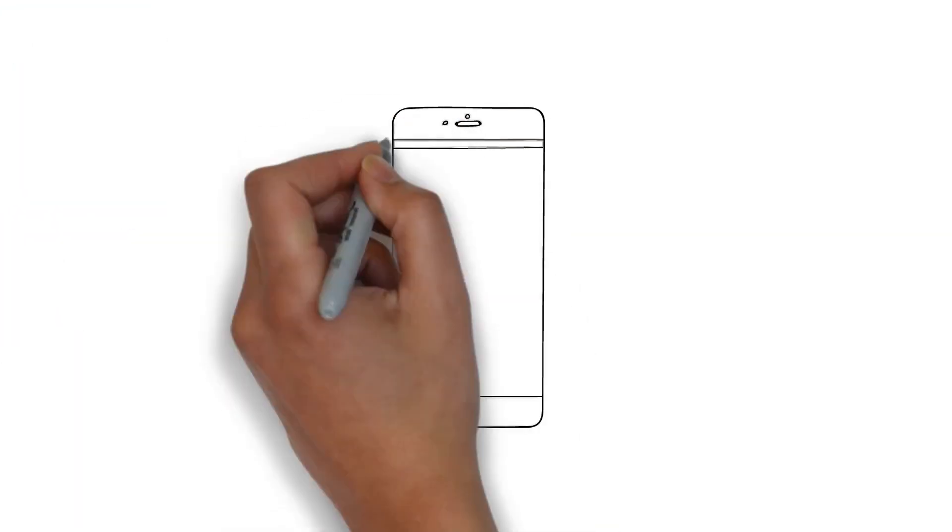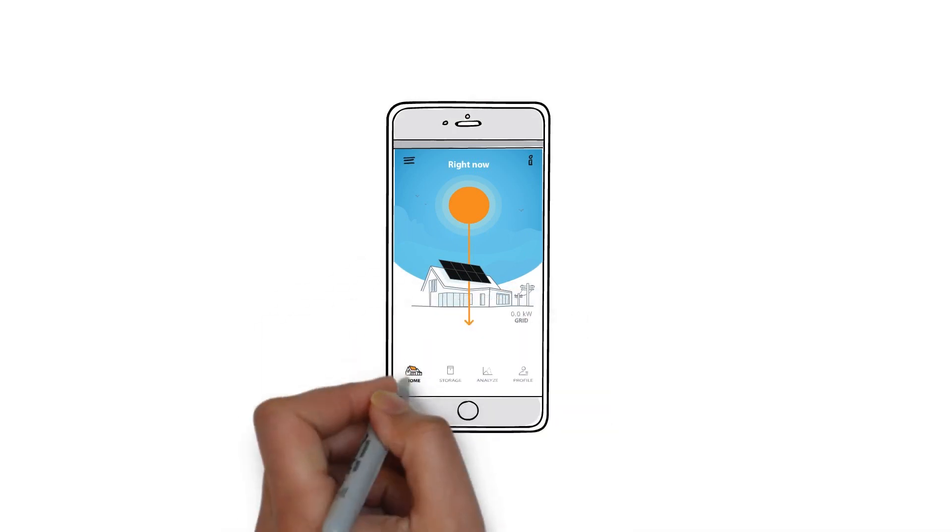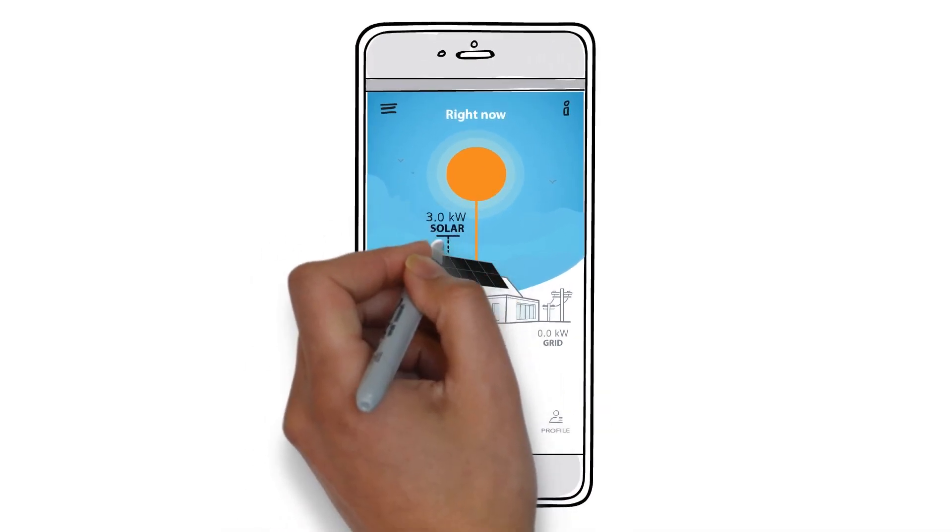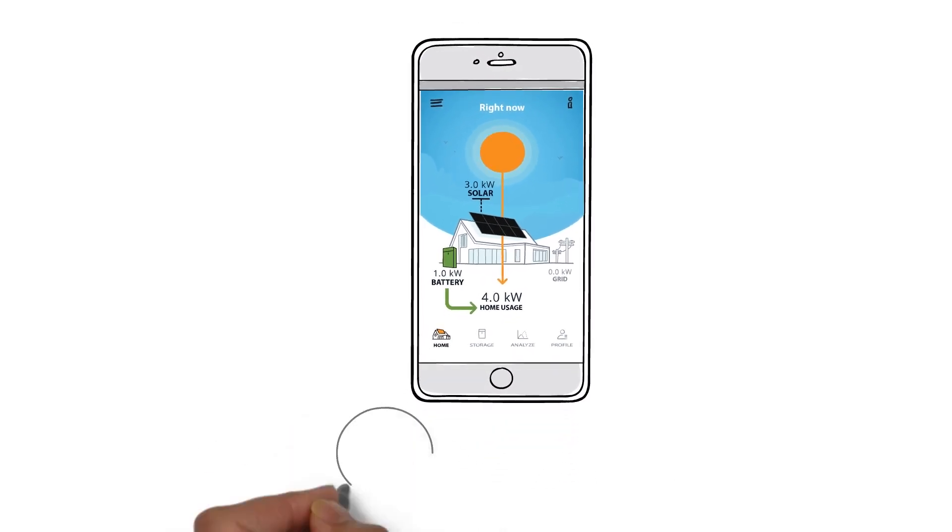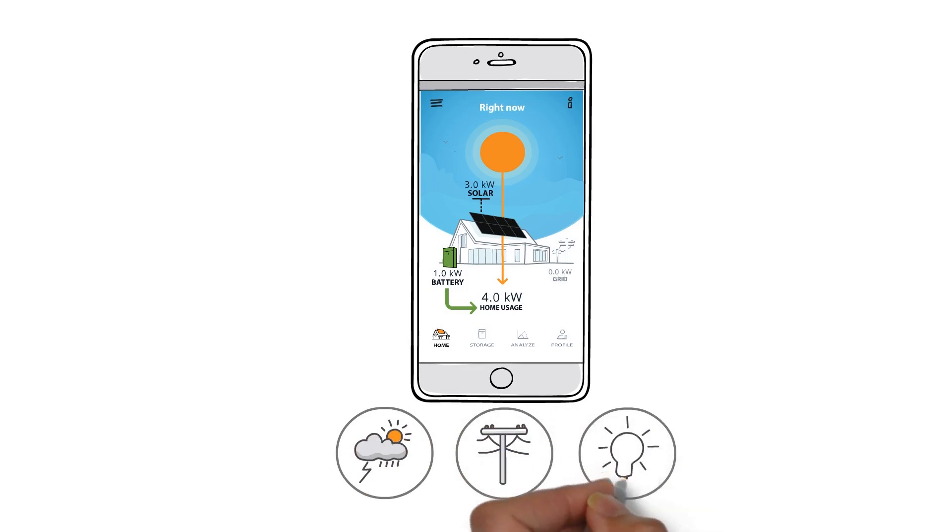Managing your storage is easy, too. With the MySunPower App, you can monitor your solar, storage, and home energy usage in real time, and adjust your settings based on weather alerts, utility rates, energy preferences, and more.